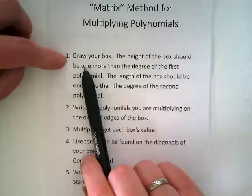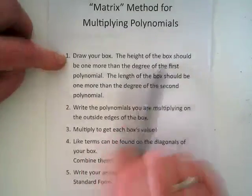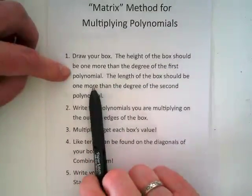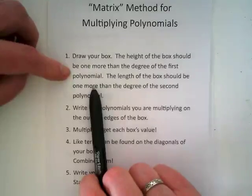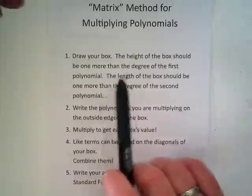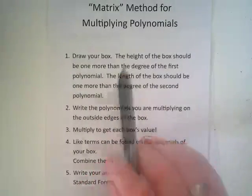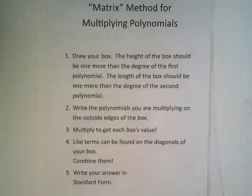First step is we're going to draw our box. The height of the box should be one more than the degree of the first polynomial. Basically, you want to make sure if you've got two by two that you end up with a box that's four by four. If you've got two times three, you're going to have a box that's six.